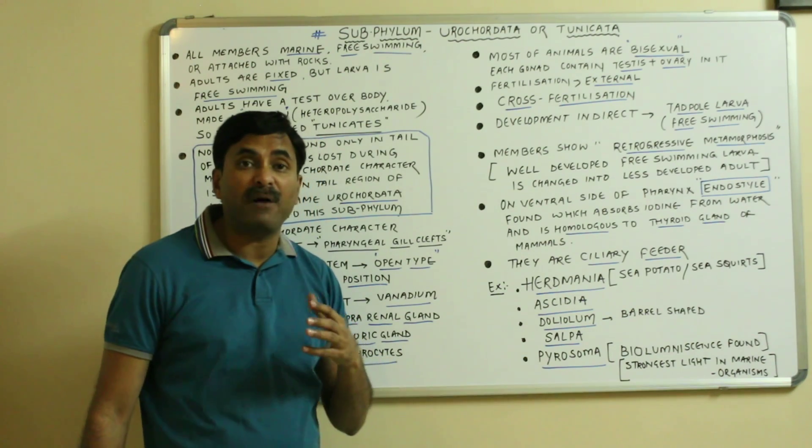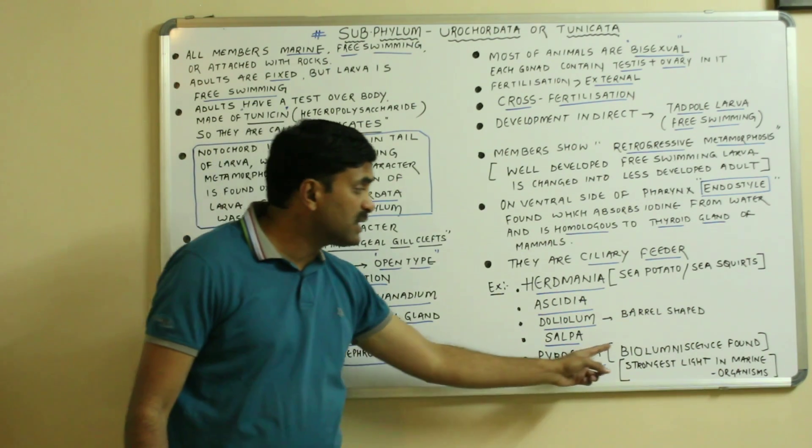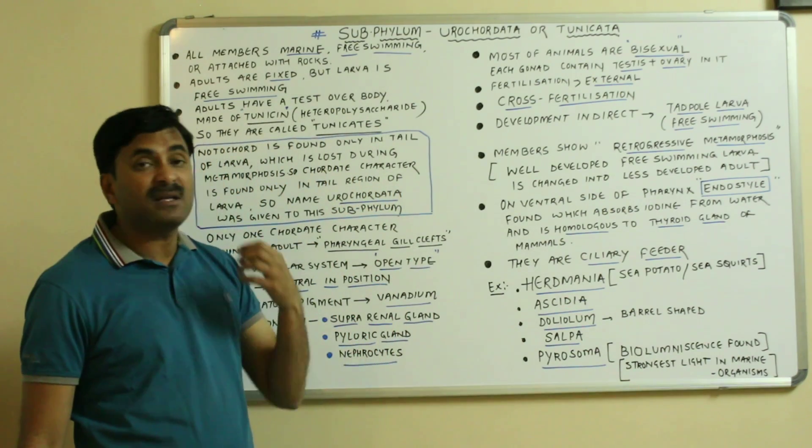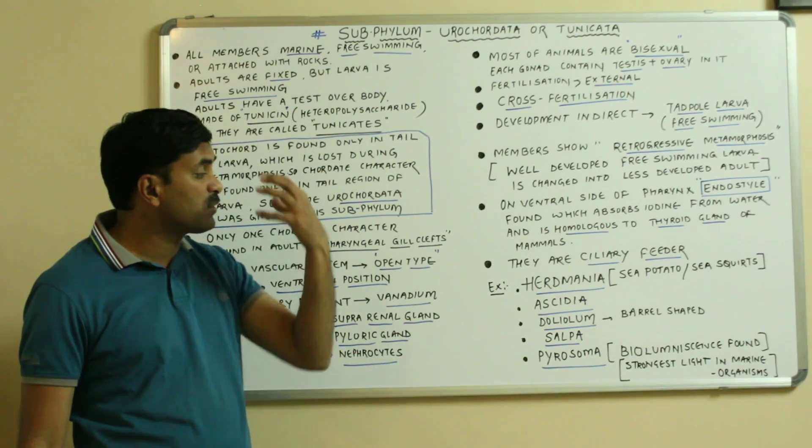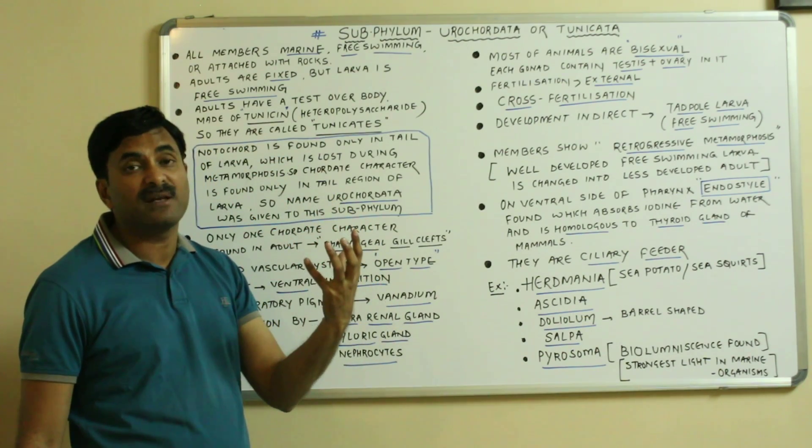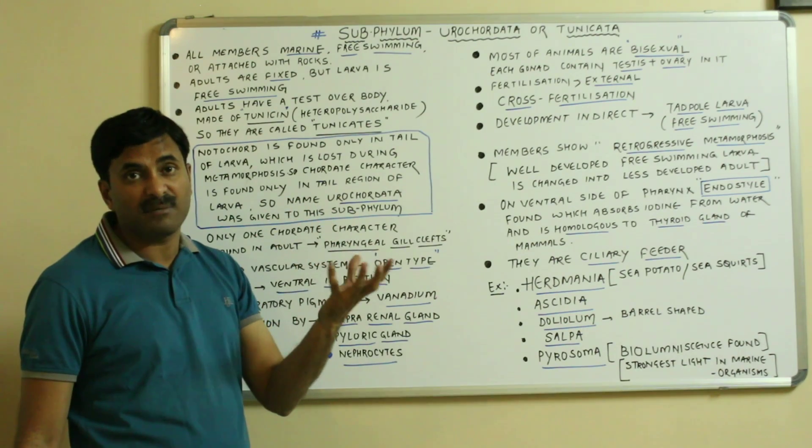And a very important member known as Pyrosoma. This Pyrosoma is having the power to emit light means it is having bioluminescence. Bioluminescence power is found and the bioluminescence power of Pyrosoma is the strongest in the entire organisms found in the marine body.